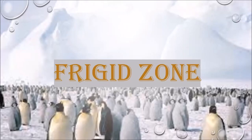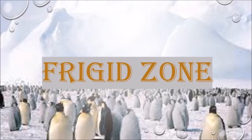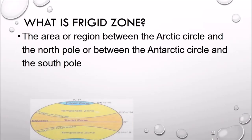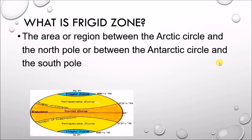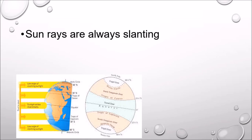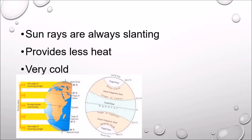Next is the frigid zone. The frigid zone is the area or region between the Arctic Circle and the North Pole, and the Antarctic Circle and the South Pole. In the frigid zone, sun rays are always slanting, it provides less heat, and it is a very cold region.